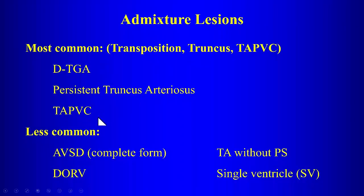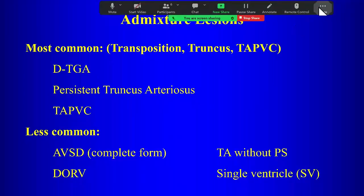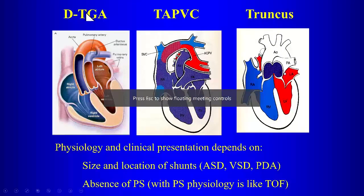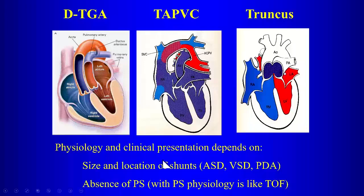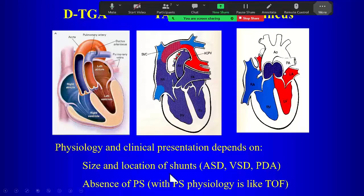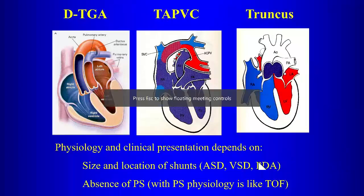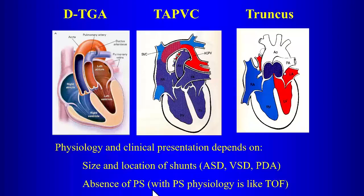Make sure you know these three: D-transposition, persistent truncus, and total anomalous pulmonary venous return, because those are fair game on the exam. The clinical presentation and physiology will depend on the size and location of shunts. All of these will have associated ASDs, VSDs, and PDAs to various degrees, allowing bidirectional shunting. To have increased pulmonary blood flow, you must have the absence of pulmonary stenosis — otherwise the physiology resembles tetralogy of Fallot.